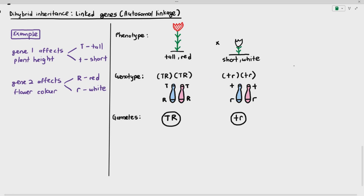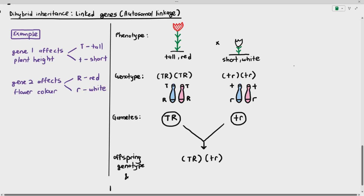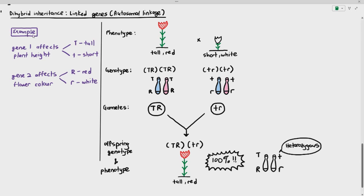When the gametes from the tall red parent fertilize the gametes from the short white parent, all offspring genotypes will be (TR)(tr). Because the offspring has large T it will be tall, and because it has large R it will be red — dominant alleles express over recessive. So 100% of the offspring will be tall and red. They will be heterozygous, with large T large R on one chromosome and small t small r on the other.